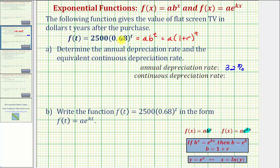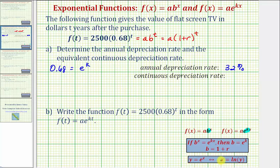Going back to the given function, notice how the base is 0.68, so we have 0.68 equals e raised to the power of k, from the fact that the base b must equal e to the k. To solve this exponential equation for k, we rewrite it as a log equation. Since y equals e to the x means x equals natural log y, and natural log is log base e, we get k equals natural log of 0.68. Now we'll go to the calculator to get our decimal approximation for k, which will give us the continuous depreciation rate.